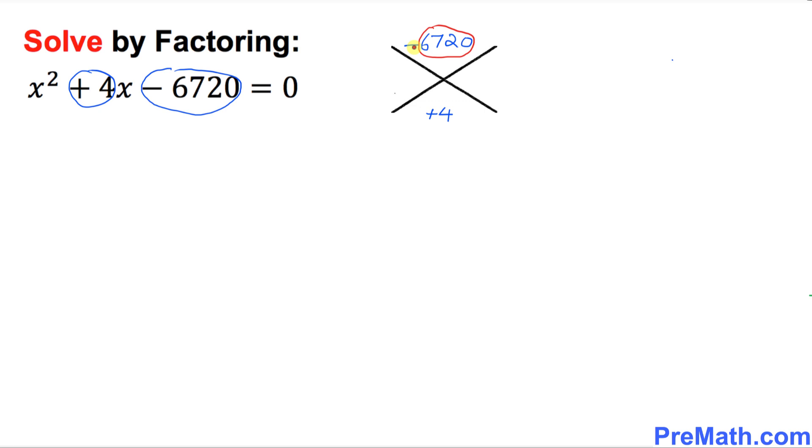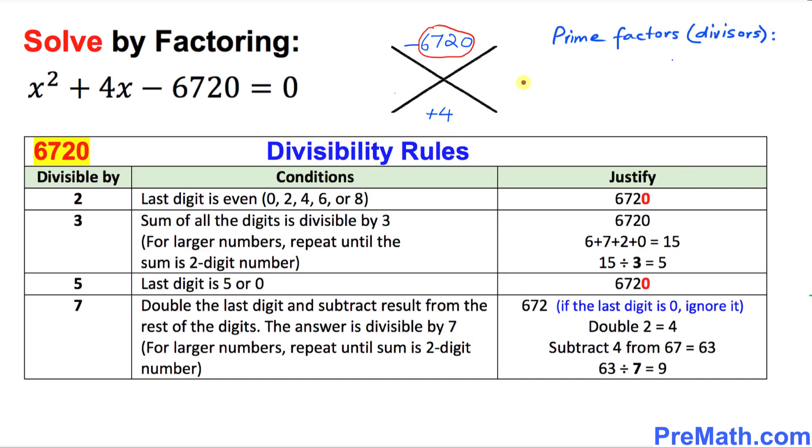Just keep in mind, don't worry about this negative sign right now. So we got 6720. In the next step, we're going to find the possible prime factors or divisors of 6720. You can do this easily, but if you're not sure, you can use the divisibility table. We know that 6720 is easily divisible by 2, 3, 5, and 7.